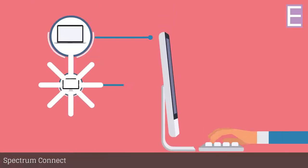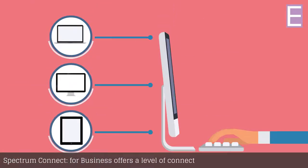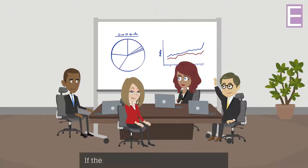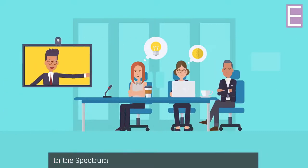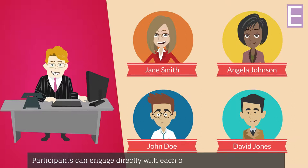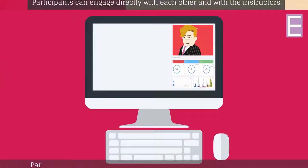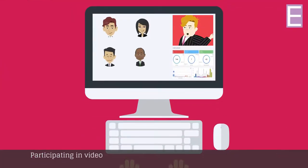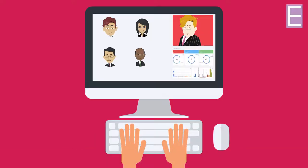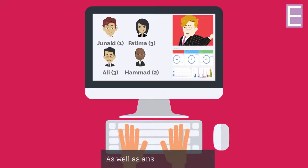Spectrum Connect for Business offers a level of connection and engagement that allows employees to engage and collaborate as if they were together in a physical space. In the Spectrum Connect for Business virtual environment, participants can engage directly with each other and with the instructors, participating in video chat discussions and raising a virtual hand to get the instructor's attention, as well as answering live polls.